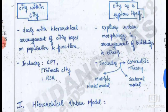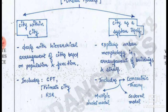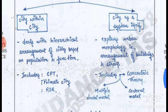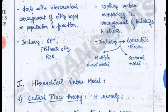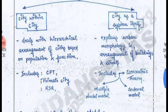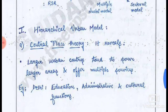Urban models can be categorized as: city within city, dealing with hierarchical arrangement of cities based on population and function including Central Place Theory (CPT) and primate cities; and city as a system itself, covering urban morphology — the arrangement of buildings and streets — including concentric zone theory, multiple nuclei theory, and sectoral model.